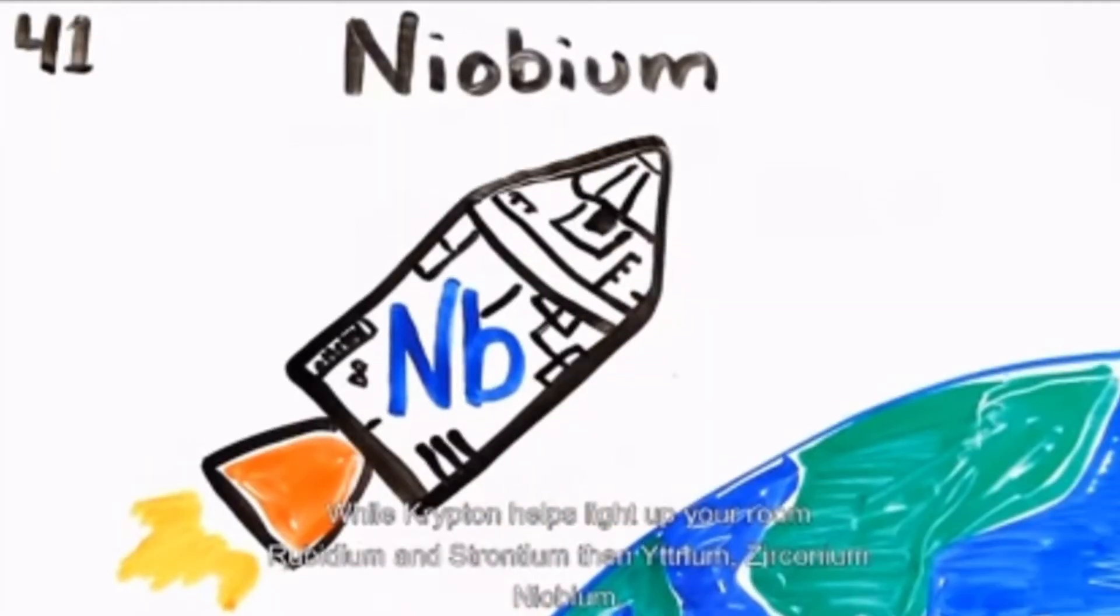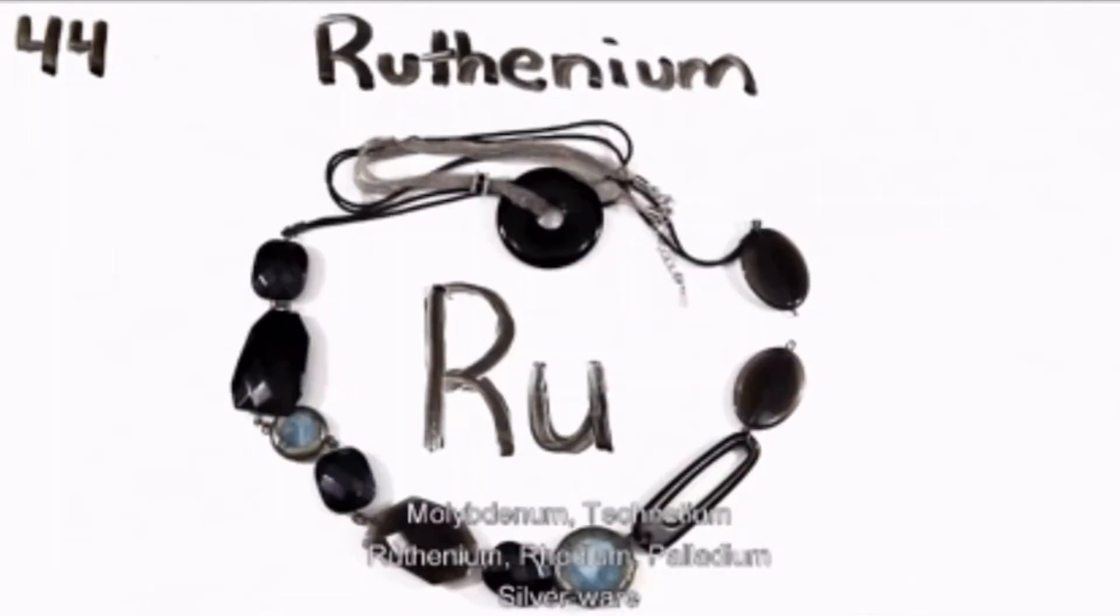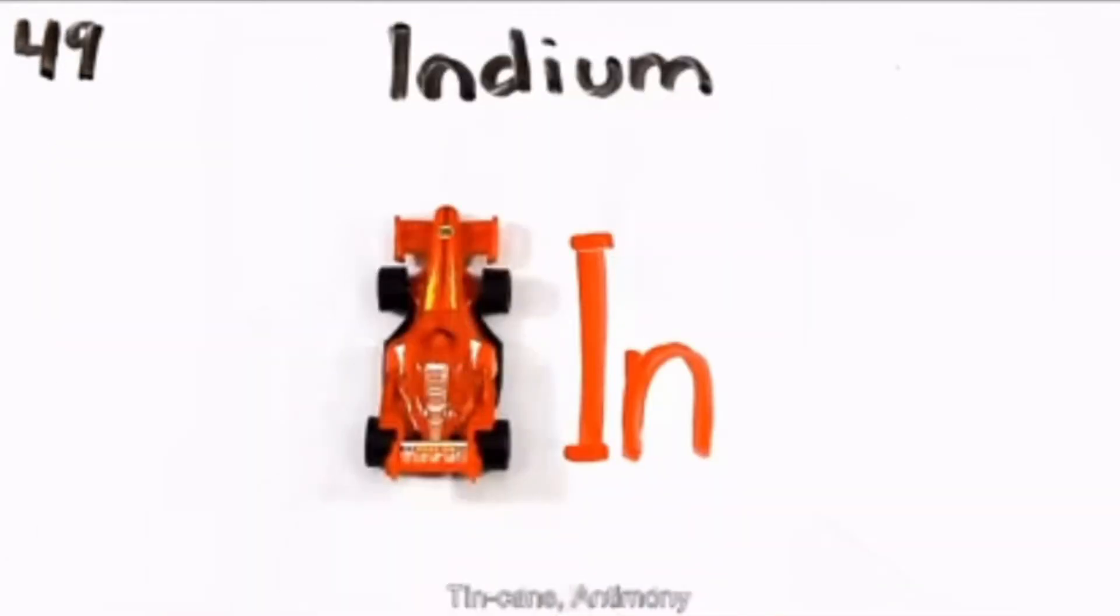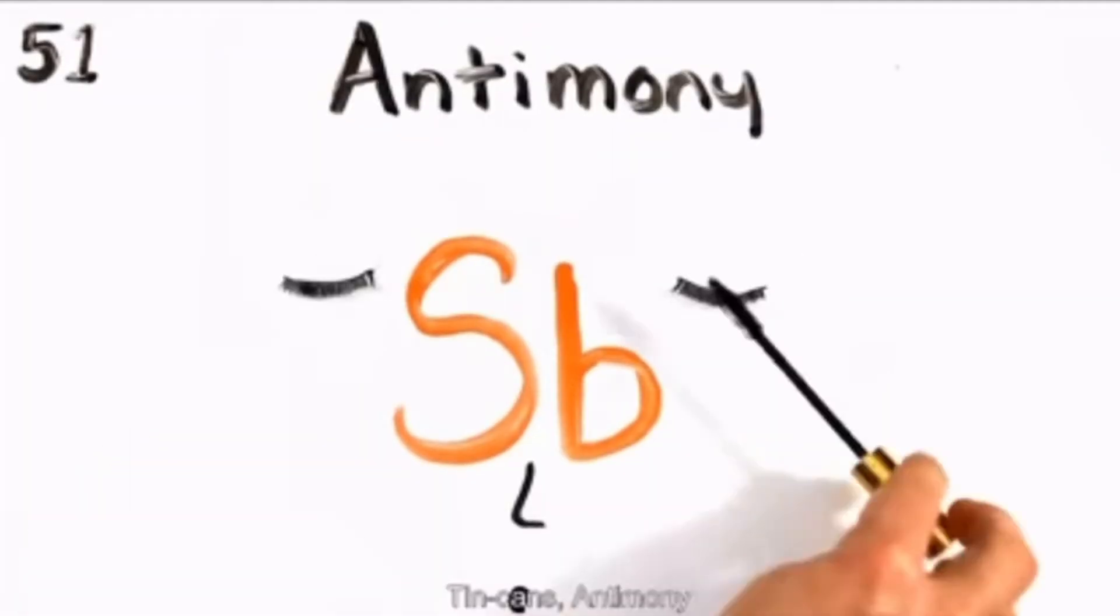Niobium, molybdenum, technetium, ruthenium, rhodium, palladium, silverware, then cadmium and indium, tin cans, antimony, then tellurium.